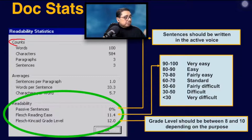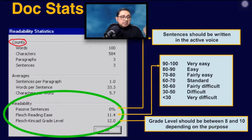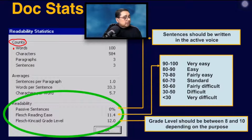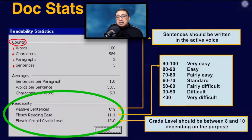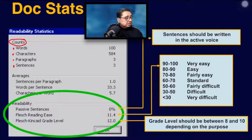On the first portion, you will see a set of counts. This is just a reading of the number of words. The computer will also try to count the number of characters, then the number of paragraphs, and then the number of sentences. Note that the computer is not actually reading your document, but it is counting based on a certain set of pre-programmed rules.